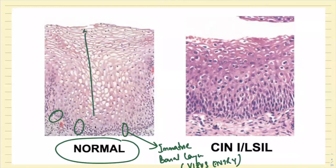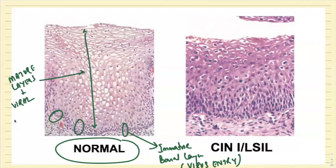And what are these layers above? These are the mature cells, the mature layers. In the mature layers, viral replication is going to happen.